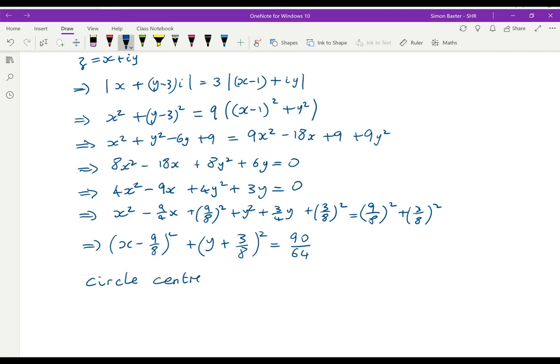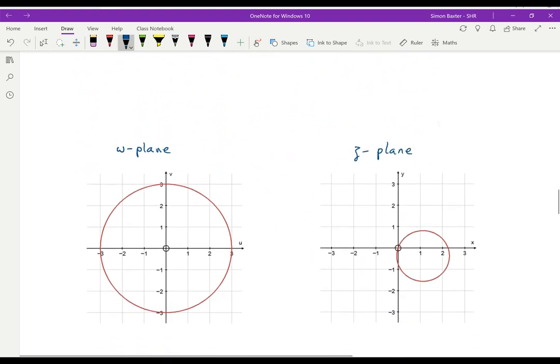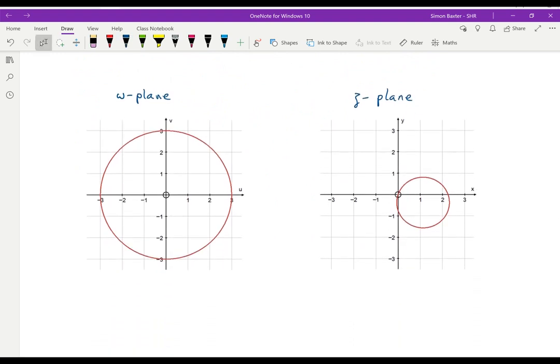And that gives us x minus 9 over 8 squared plus y plus 3 over 8 squared equals 90. If you work it out, 81 plus 9 over 64. That is a circle. Center 9 over 8, minus 3 over 8. And radius, route 90 is 3 root 10, and route 64 is 8. So in this case we start in the W plane with a circle radius 3 center the origin, and we finish in the Z plane with a circle center 9 over 8, minus 3 over 8, radius 3 root 10 over 8.